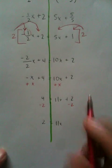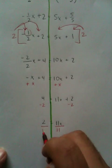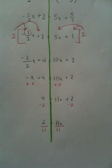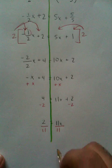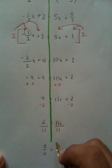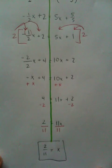And last but not least, we'll divide every single thing by 11. The reason for that is because 11 times x, in order to get x by itself, we have to divide. x equals 2 over 11. It's that easy and it's that beautiful.